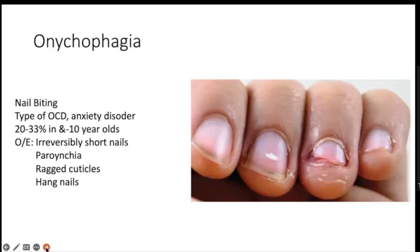Onychophagia — nail biting — is considered a type of OCD or anxiety disorder. It is commonly seen in around 20 to 33 percent of children around 10 years of age. The nail becomes irreversibly short, paronychia can occur, ragged cuticles and hangnails are present. Behavioral therapy is the main treatment, as this is essentially an OCD-like anxiety disorder.